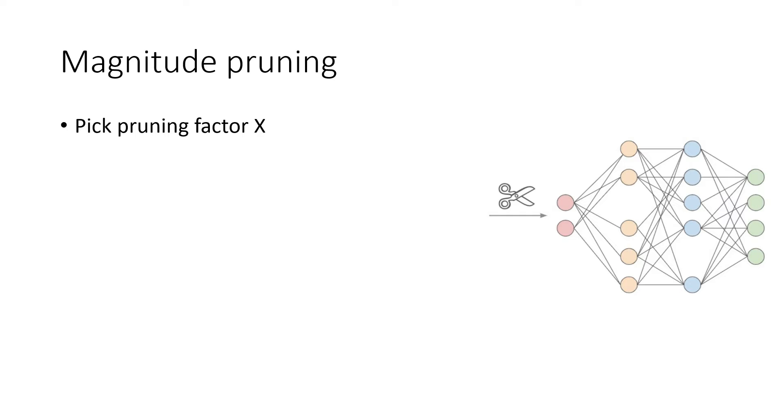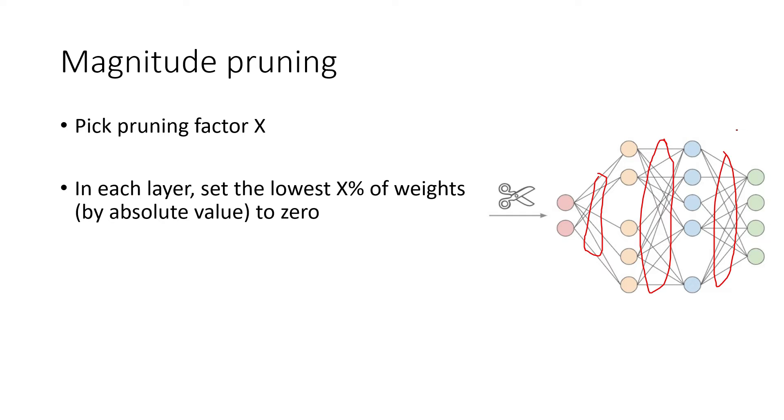In magnitude pruning, you first pick a pruning factor x, which denotes what proportion of the connections you would like to remove. Then in each layer of the network, you set the lowest x percent of the weights by absolute value to zero. The idea being that the lowest weights by absolute value, so the ones closest to zero, are the least important for the network to function. By removing some of the connections, your model will experience some degradation in accuracy. So as an optional third step, you may want to retrain your model for a few more iterations, while keeping the removed weights fixed at zero, and this is to recover some of the accuracy.